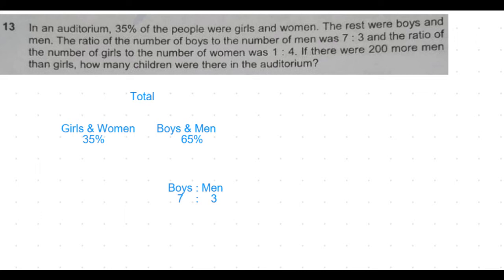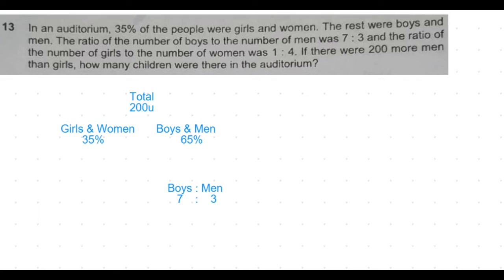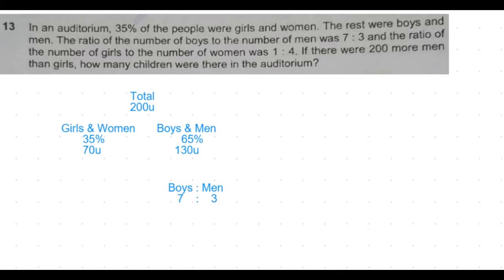We would get that in decimals, which wouldn't be convenient to calculate. So instead of having it in percentage, if we have it as 200 units, then 65 percent of the 200 units is 130 units, which is boys and men.